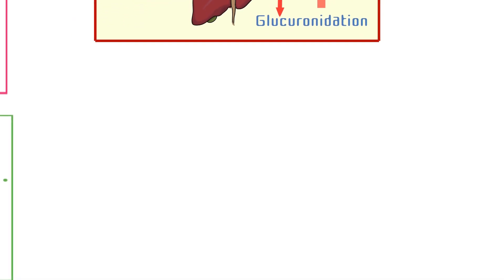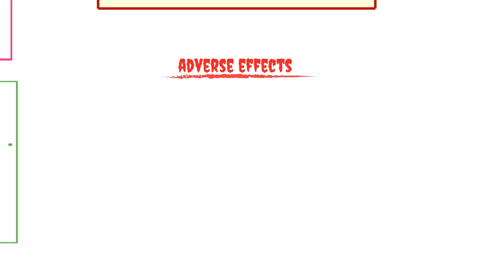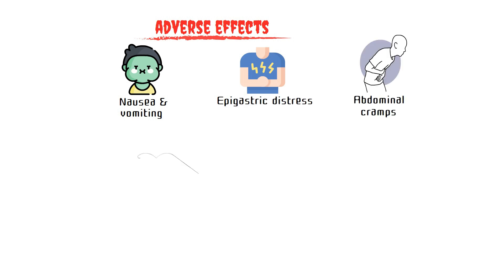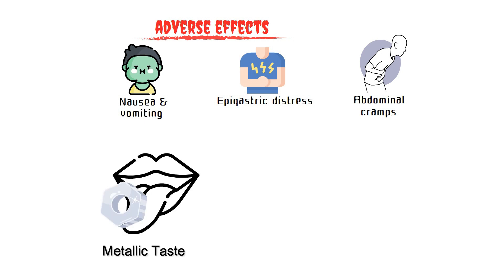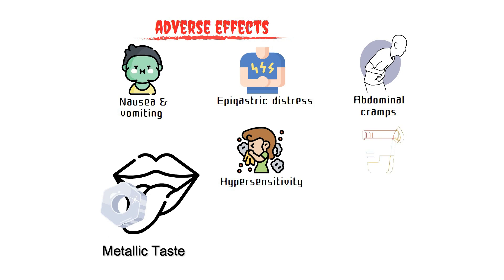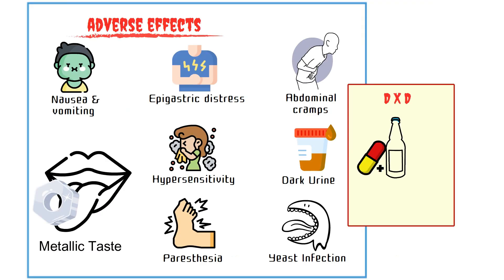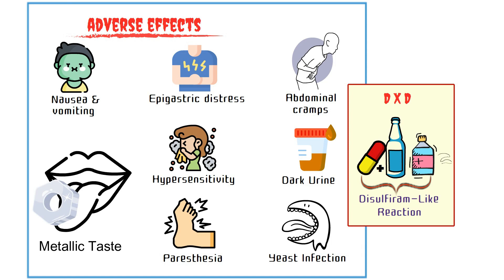The most common adverse effects of metronidazole are nausea and vomiting, epigastric distress, and abdominal cramps. Patients commonly also feel an unpleasant metallic taste. Infrequent adverse effects include hypersensitivity reactions, dark urine, paresthesia, and yeast infection of the oral cavity. If taken with alcohol, a disulfiram-like reaction may occur, so it should also be avoided with medications like cough syrups containing alcohol as excipients.